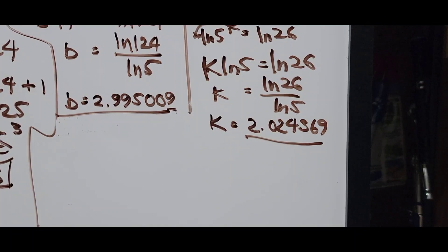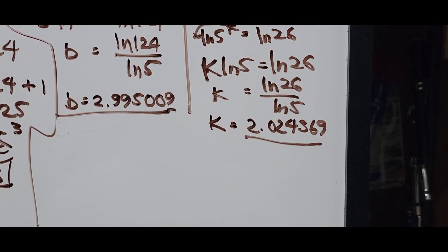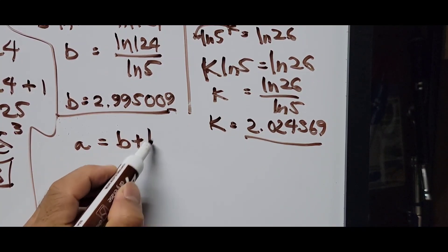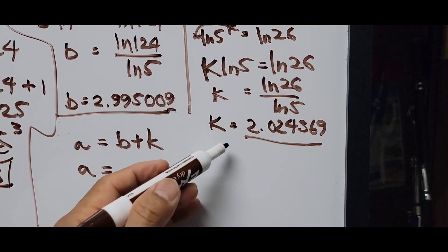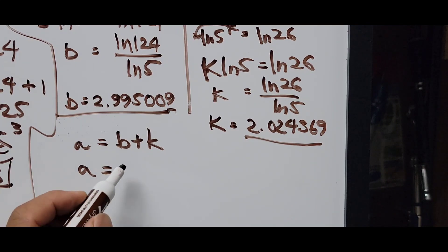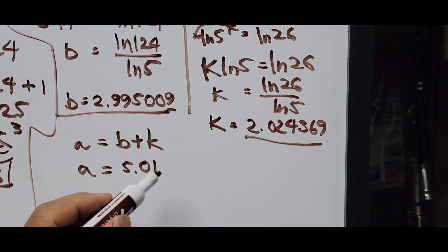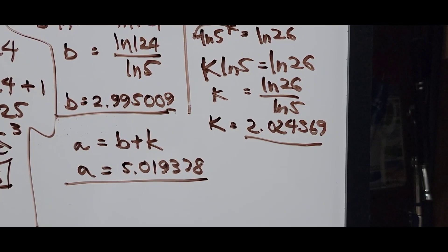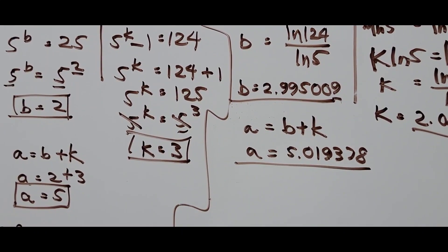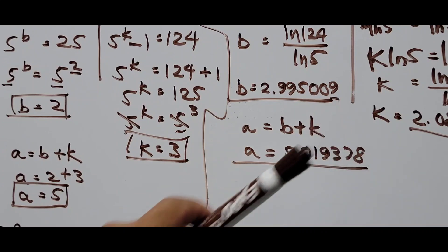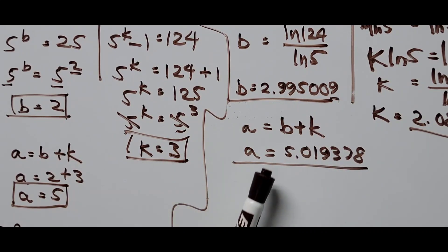From the relationship A equals B plus K, we substitute the values we found. The value of A comes out to approximately 5.019378. Notice our values of A and B here are slightly different from the first solution: in the first solution B equals 2 and A equals 5, while here B equals approximately 2.995009 and A equals approximately 5.019378.